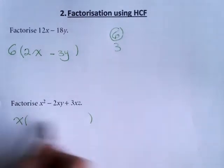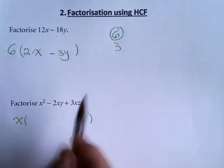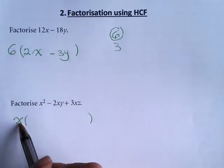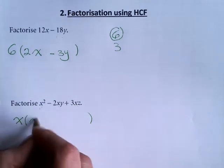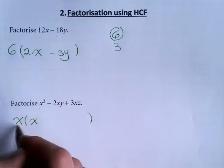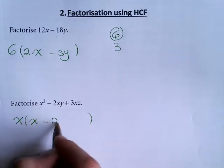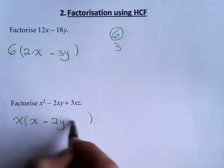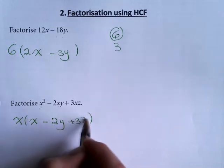To find what's inside the brackets, I will divide each term by the common factor. x squared divided by x equals to x, negative 2xy divided by x equals to negative 2y, positive 3xz divided by x equals to positive 3z.